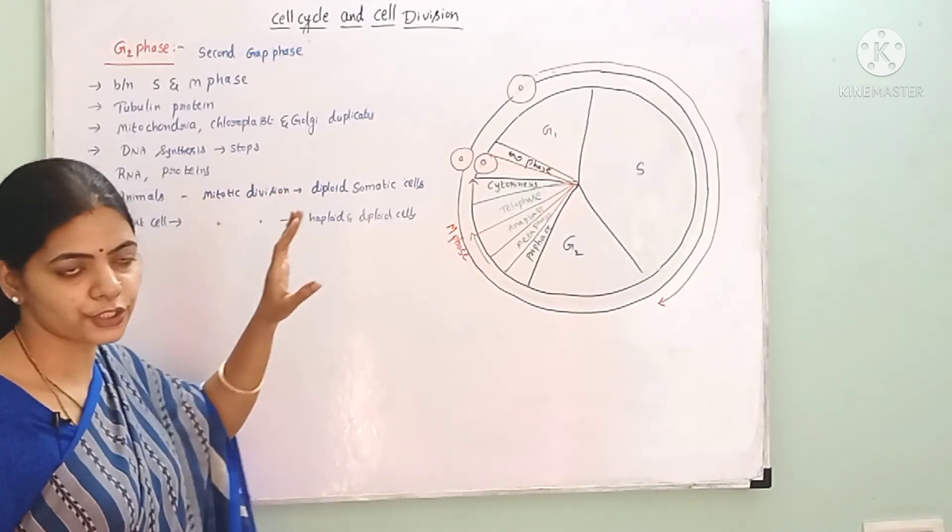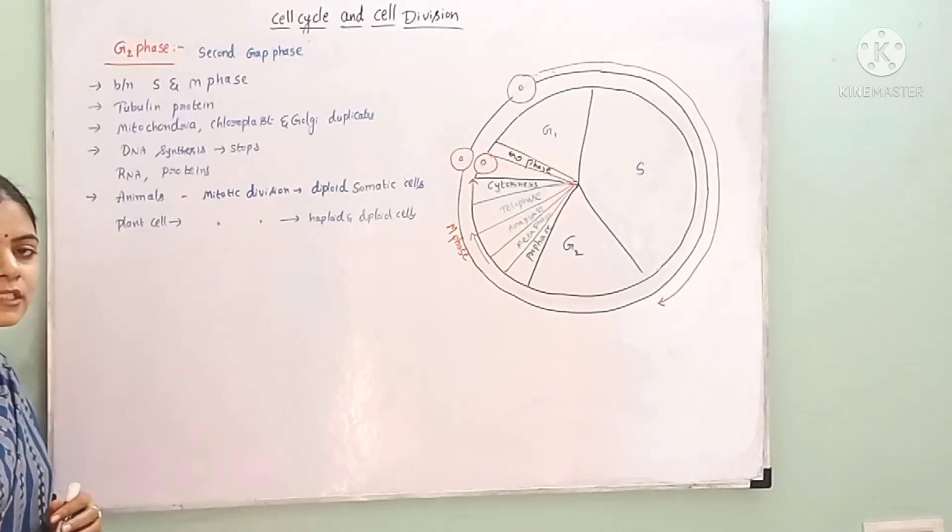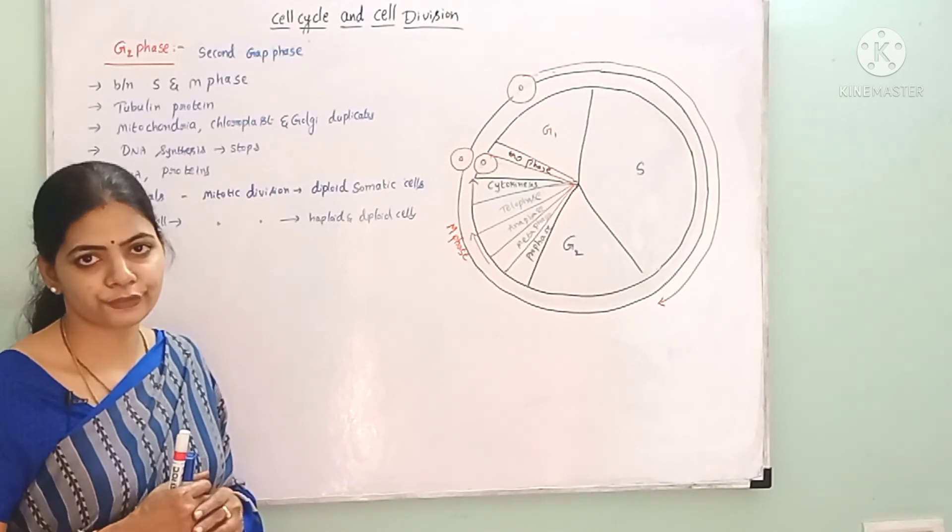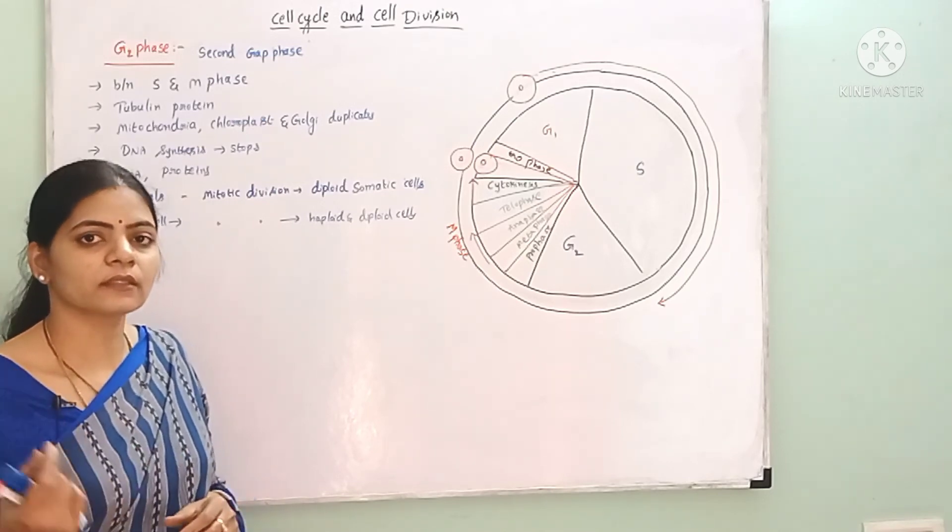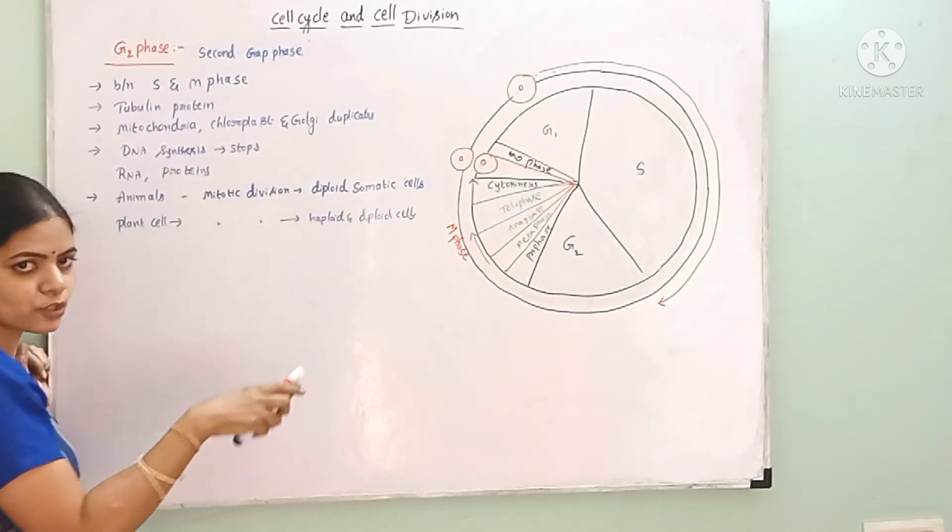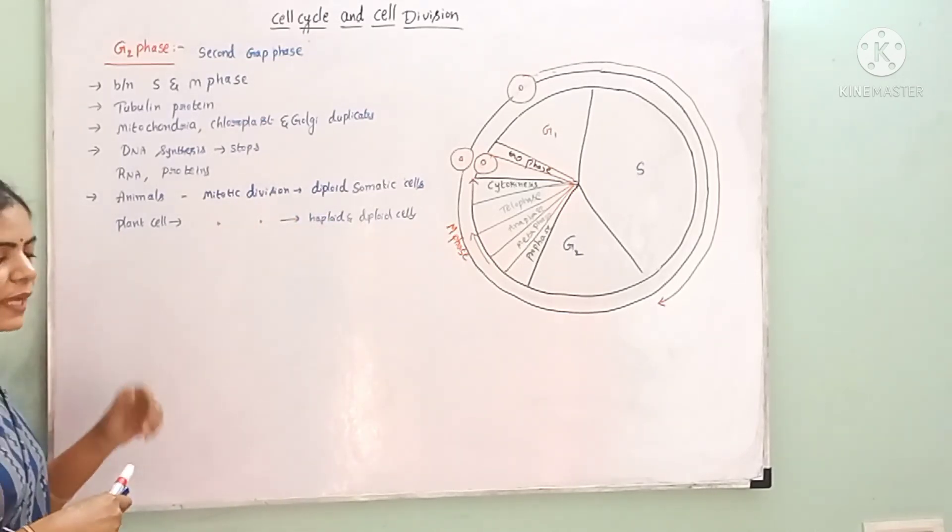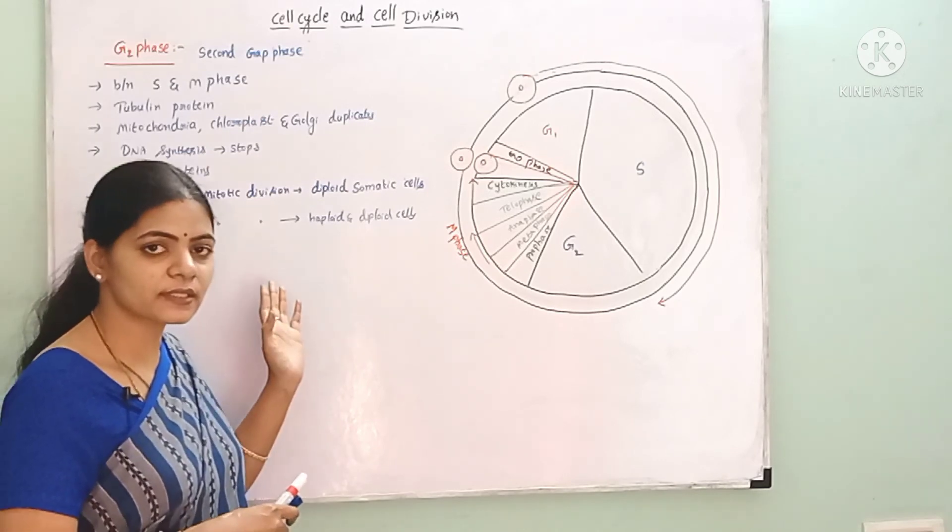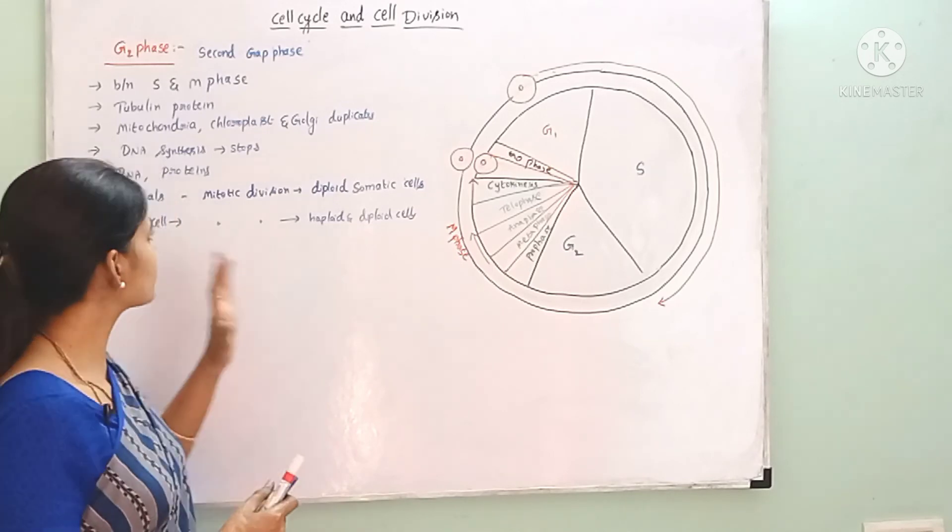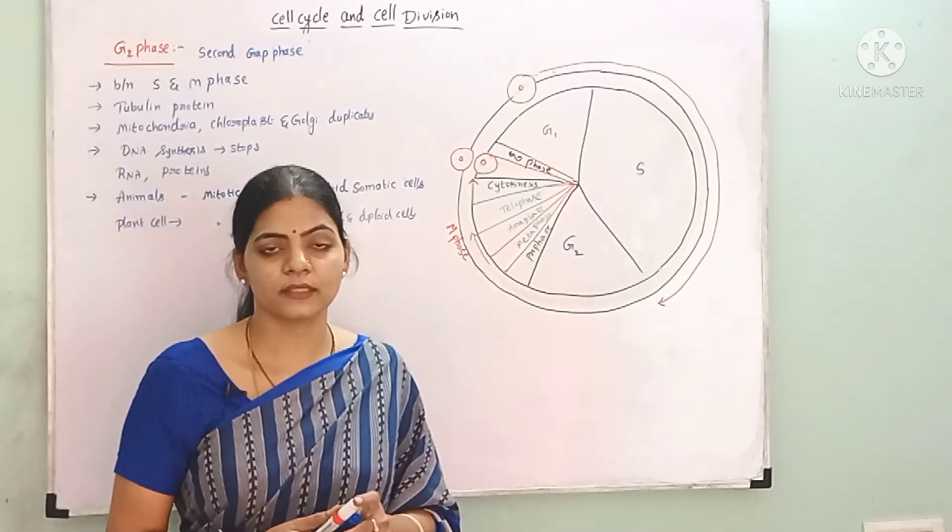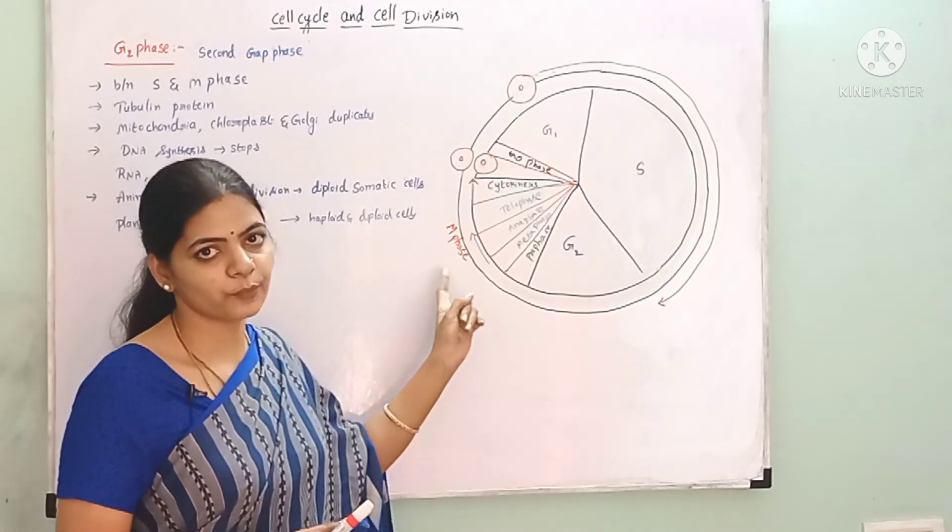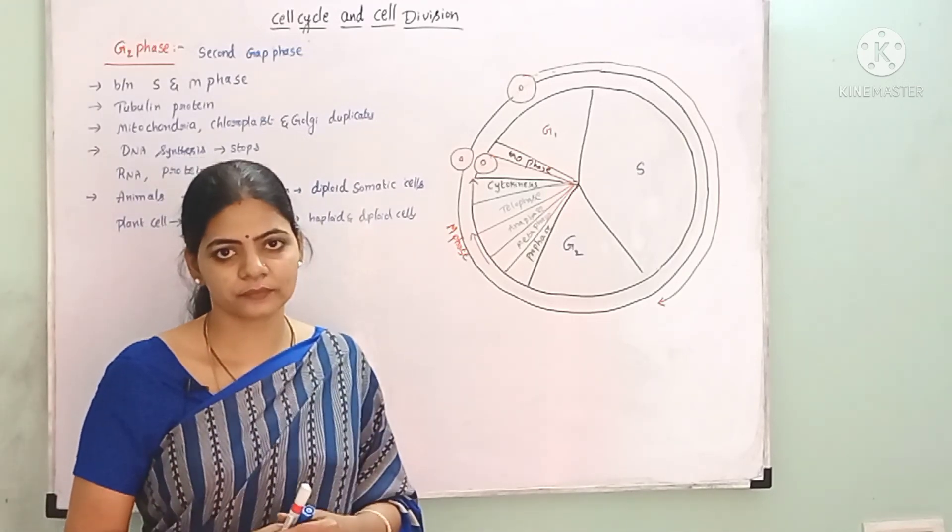Mitotic division occurs only in somatic cells, not in gametes. It occurs in both plant cells and animal cells, in haploid and diploid cells. This is about gap 2 phase in interphase. Next is the M phase, which we'll cover in the next class.